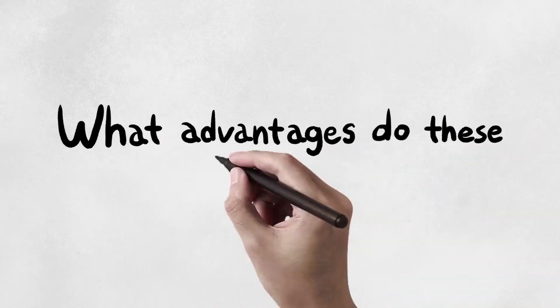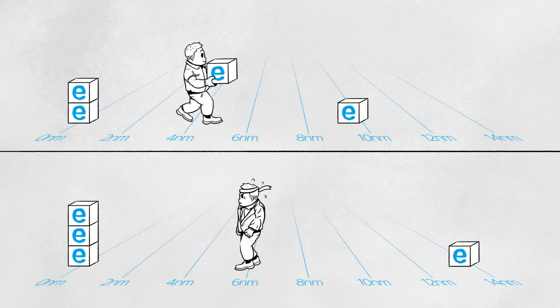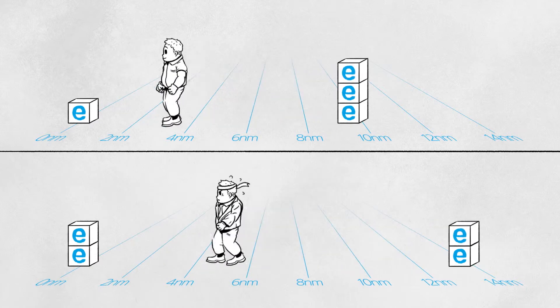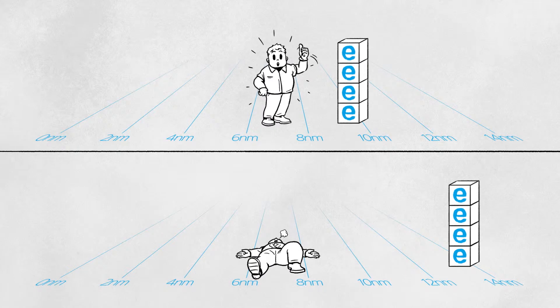What advantages do these finer circuits offer? The smaller the width of the circuit, the shorter the traveling distance of the electron is, improving the efficiency as well as the performance of the chip.